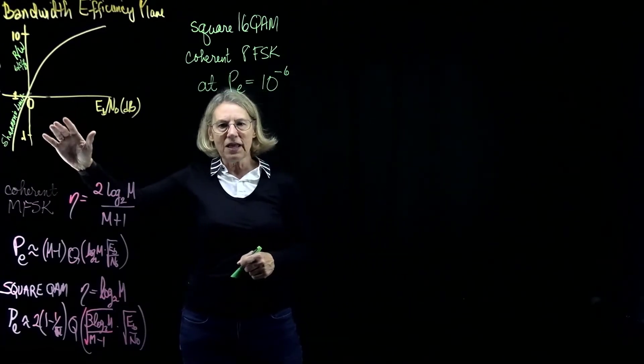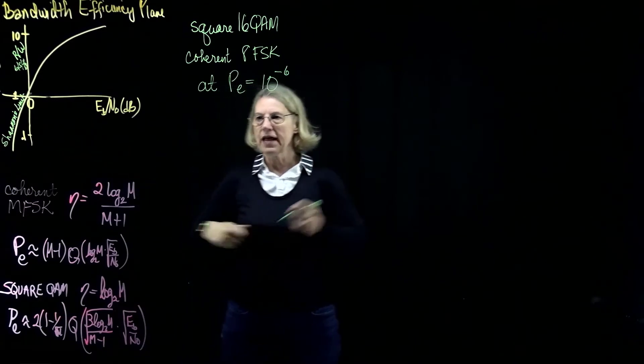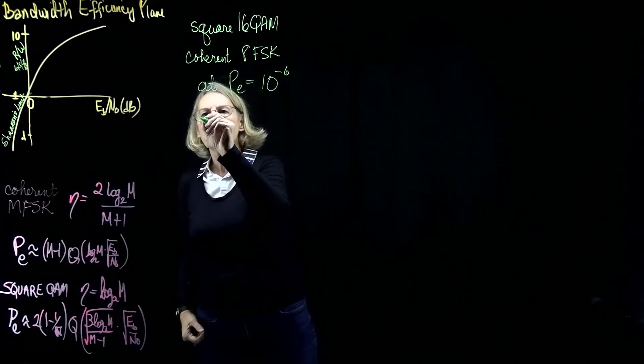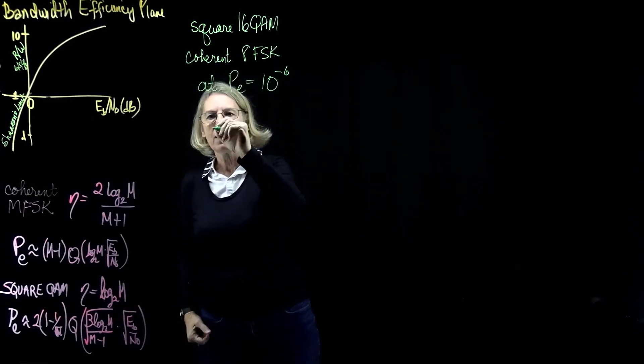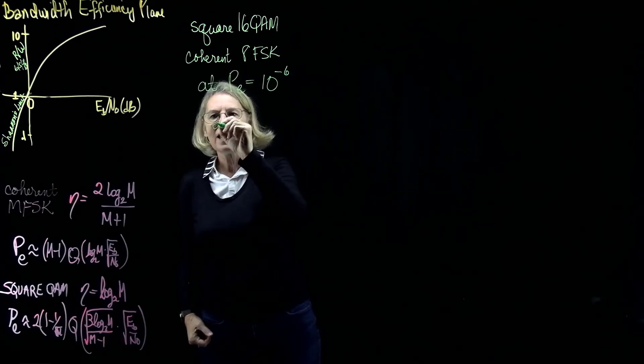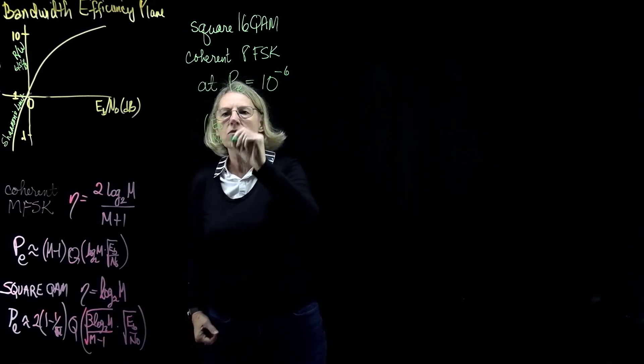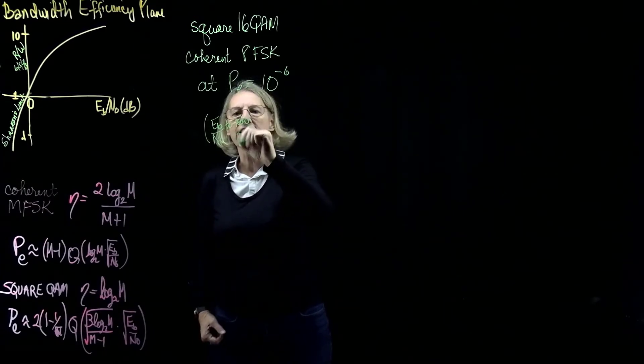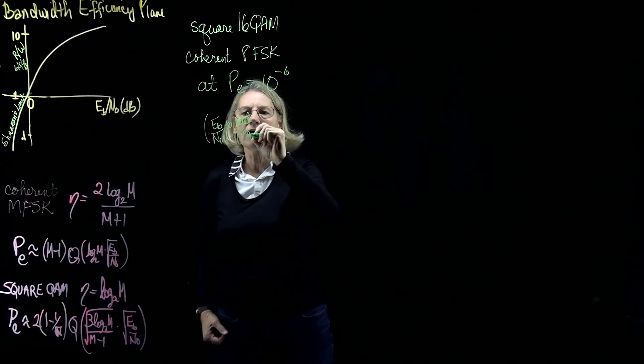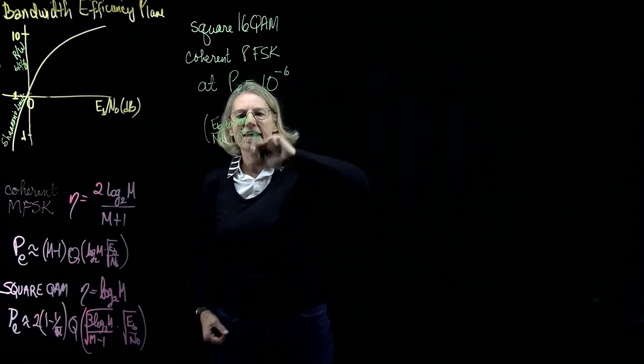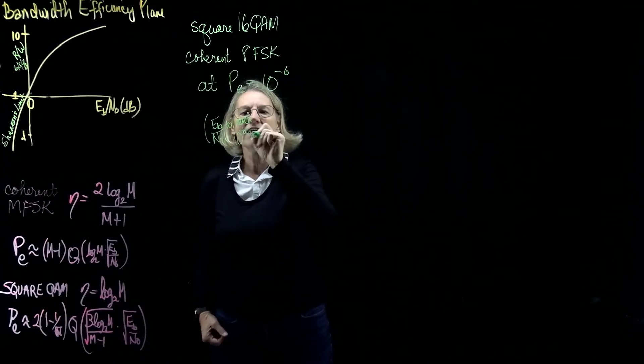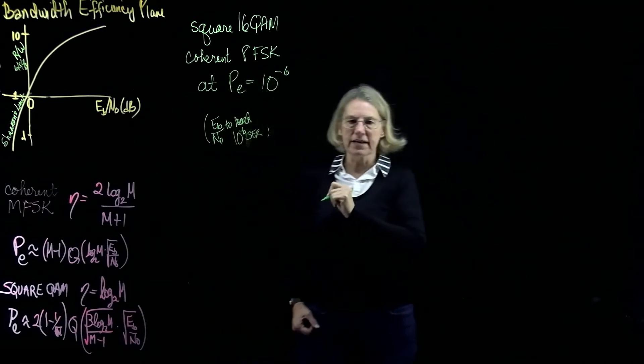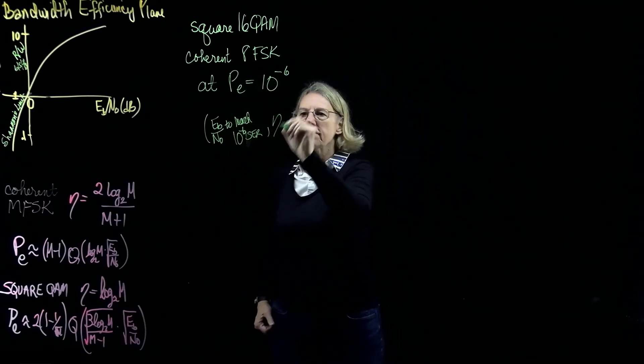Now, when we plot on the bandwidth efficiency plane, we're looking for coordinates. So the coordinates are, in the x direction, eb over n0 to reach, and in this case, you specify 10 to the minus 6 SER, symbol error rate. And the second coordinate is going to be the spectral efficiency.